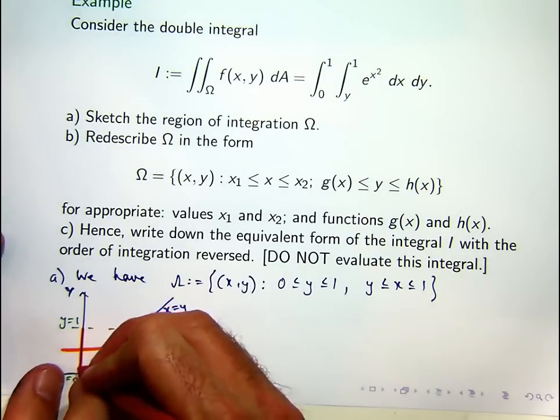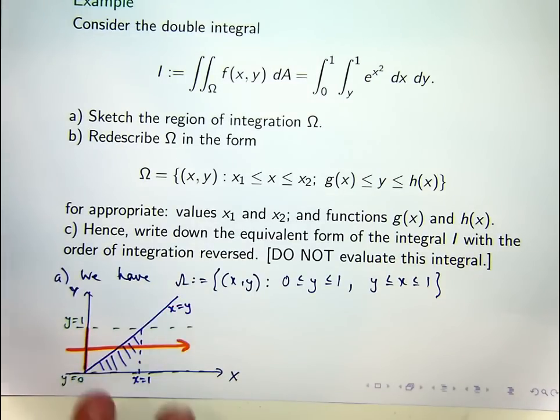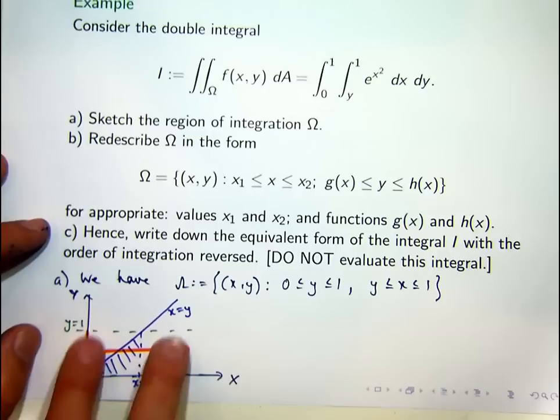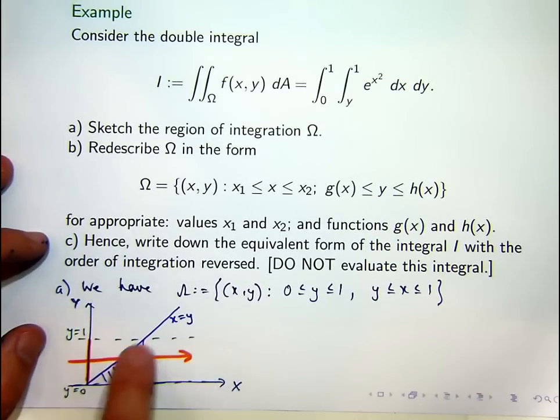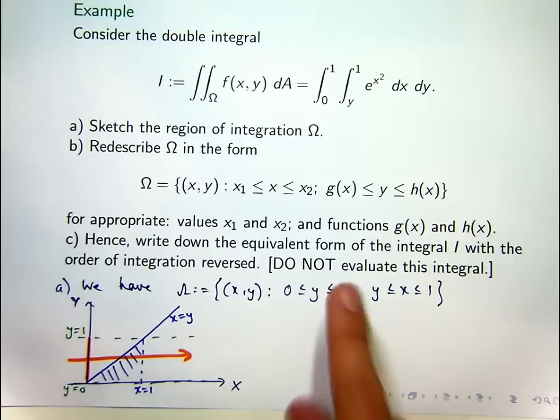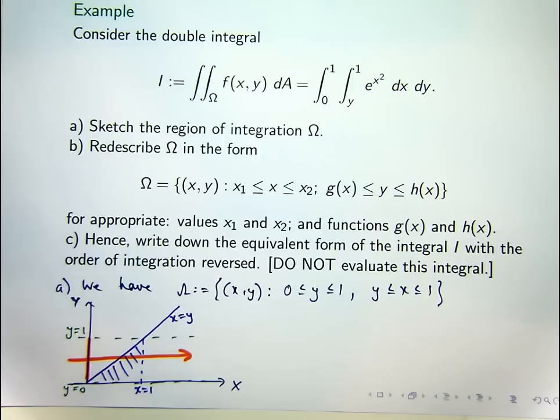The only last thing we need to check is the y bounds. So if I move this horizontal line up and down, how far do I need to move it up and down to sweep out the entire triangle? Well, I want to go from 0 up to 1. So we actually do have the correct sketch there, where the shaded bottom rectangle is your two-dimensional set, omega.